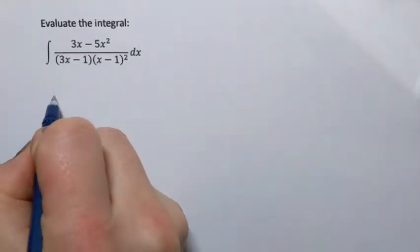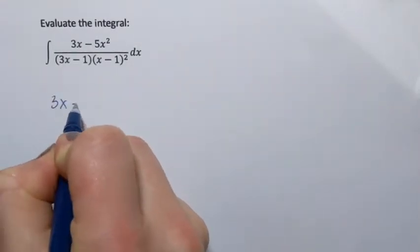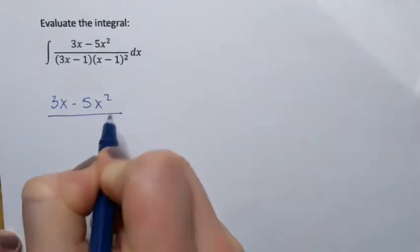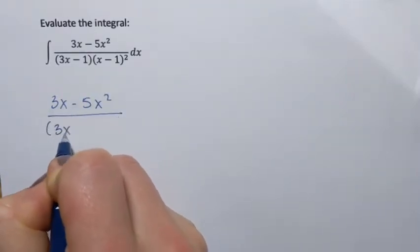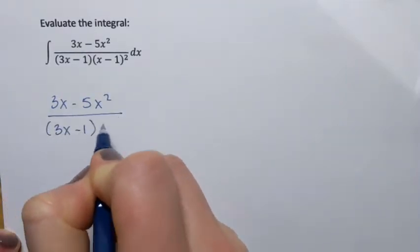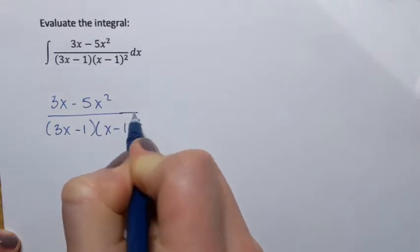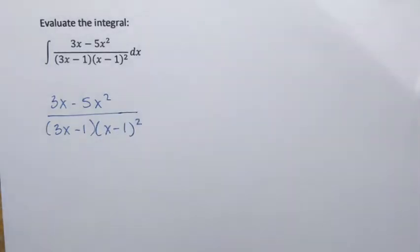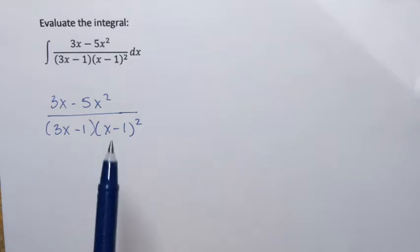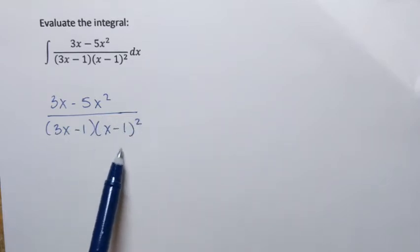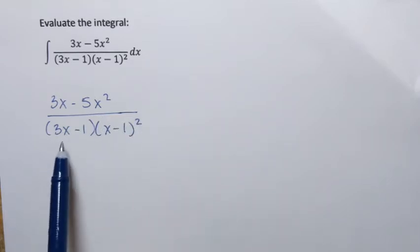So I'm going to rewrite this rational expression right here on the side and perform the partial fraction decomposition. For that, I need to observe what kind of factors I have in the denominator. I can see that the denominator is already factored.